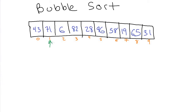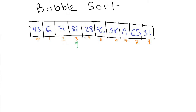Then we move on to the next element, the 71, and compare it with the item to the right of it. They're out of order, so we swap them. Then we move on to the next element, the 71, and compare it to the element to the right, which is now the 82. They aren't out of order — 71 should be before 82 — so we move on to the next item. Now we're in slot three and compare the 82 to the element to the right, which is 28. These two are out of order, so we swap them around.